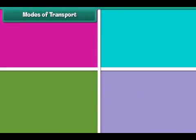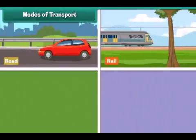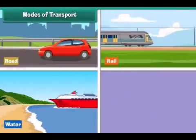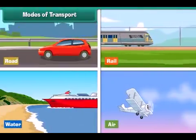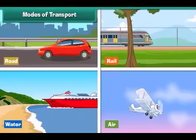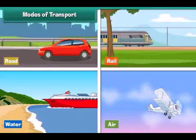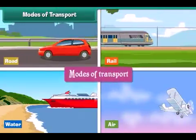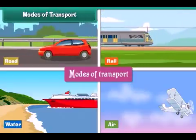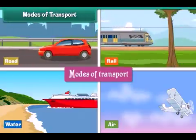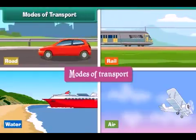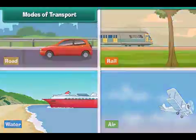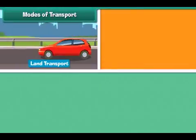Modes of transport: Goods, animals and people can be transported by road, rail, water or air. Different mediums used for transportation are known as the modes of transport. Modes of transport can be broadly divided into three categories: land transport, water transport, and air transport.